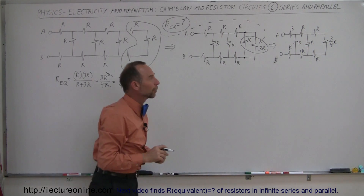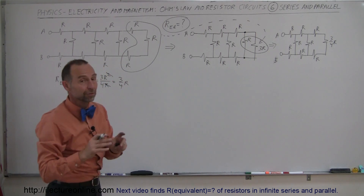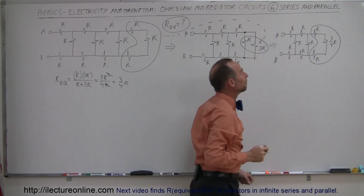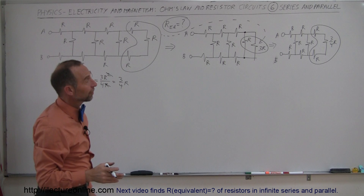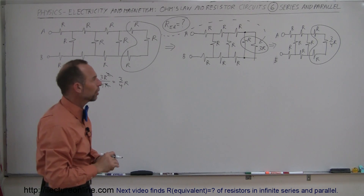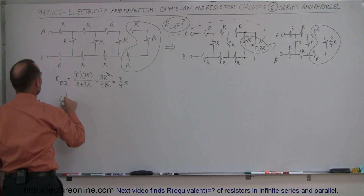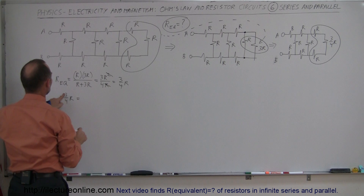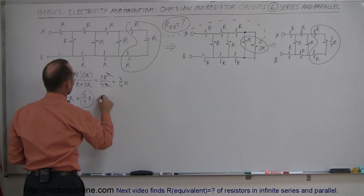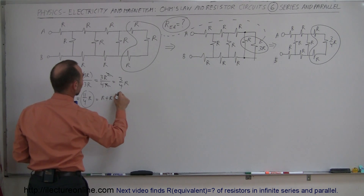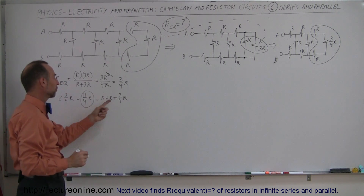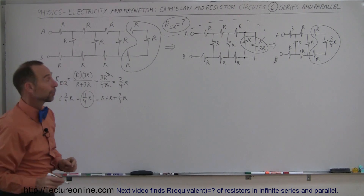Now we're going to draw our next circuit by simplifying even more. We're going to take these three resistors and combine them — they're in series, so we simply add them together. R plus R plus 3/4 R is 2 and 3/4 R. That's 2 times 4 is 8, plus 3 is 11, or 11/4 R. Notice if there were 3 full R's together we'd have 12 fourths, but minus a quarter is only 11 fourths.